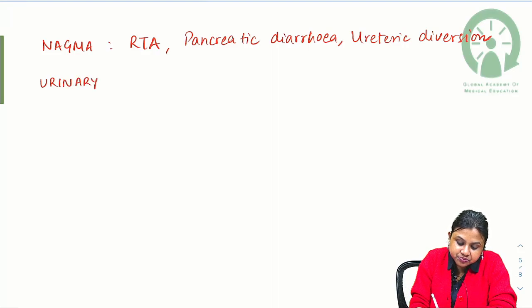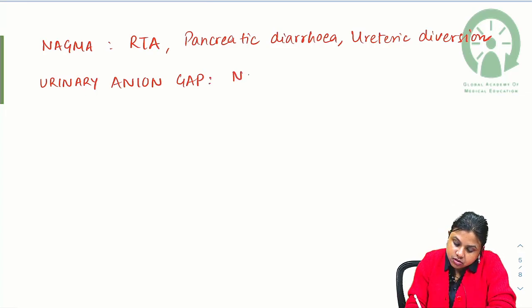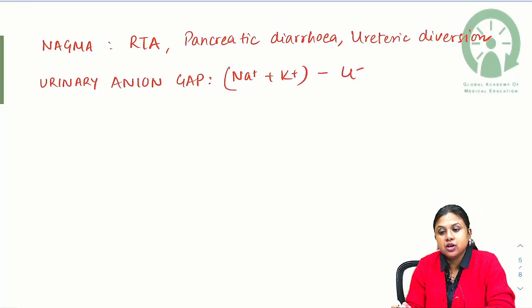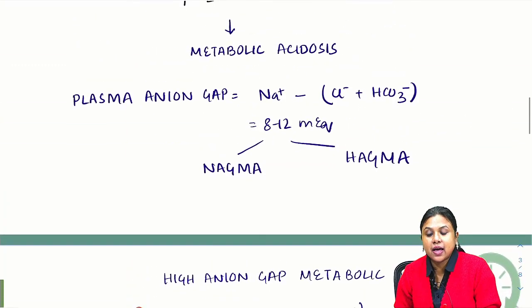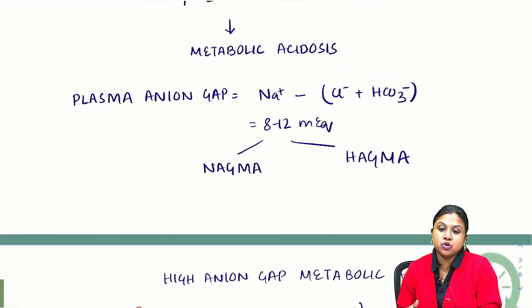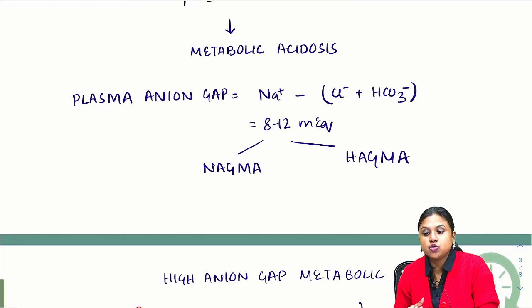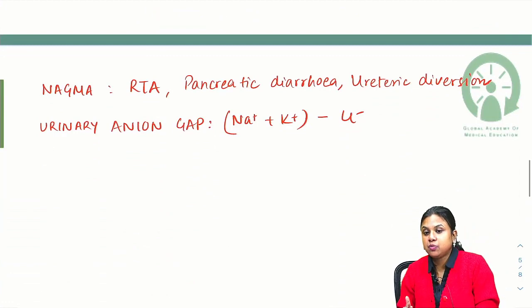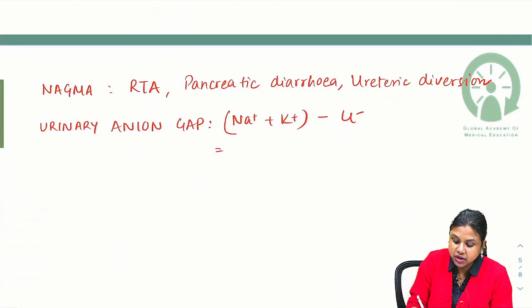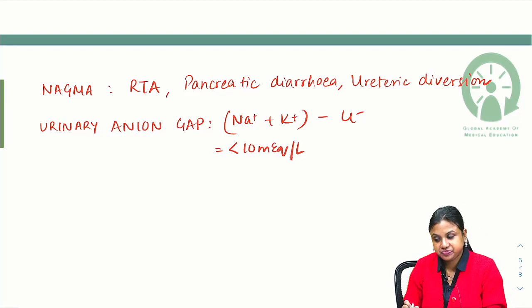The urinary anion gap formula is sodium plus potassium minus chloride. Here you take into account potassium. Go back and look—in case of plasma anion gap, we do not take potassium into account. Plasma anion gap does not include potassium, whereas urinary anion gap does. This should be less than 10 milliequivalents per liter.